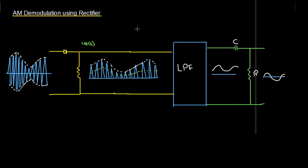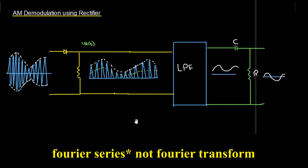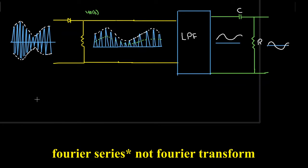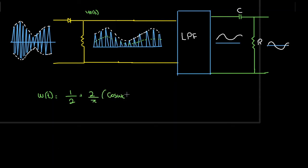The half-wave rectifier produces a periodic square pulse whose Fourier transform was found in Example 2.8. In Example 2.8 we found the Fourier series of the square pulse: omega of t equals 1/2 plus 2/pi times cosine(ωc·t) minus 1/3 cosine(3ωc·t) plus 1/5 cosine(5ωc·t) and so on.